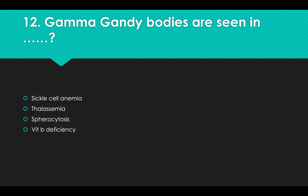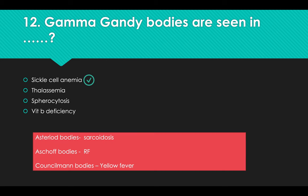Gamma-Gandy bodies are seen in: Options: A) Sickle cell anemia, B) Thalassemia, C) Spherocytosis, D) Vitamin B deficiency. Answer: Option A, Sickle cell anemia. Additional: Asteroid bodies are seen in sarcoidosis and Aschoff nodules in rheumatic fever; Councilman's bodies in yellow fever.